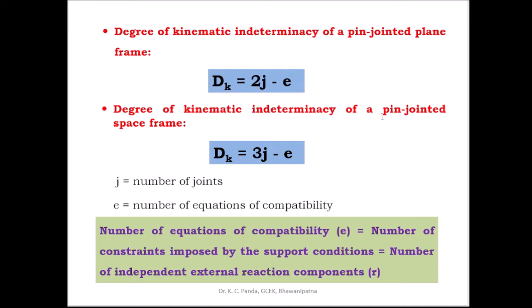Similarly, the degree of kinematic indeterminacy of a pin-jointed space frame is dk = 3j − c. The reason for using 3j is that at each joint of a pin-jointed space frame, there are three independent displacement components, so you take 3j minus the number of compatibility equations.